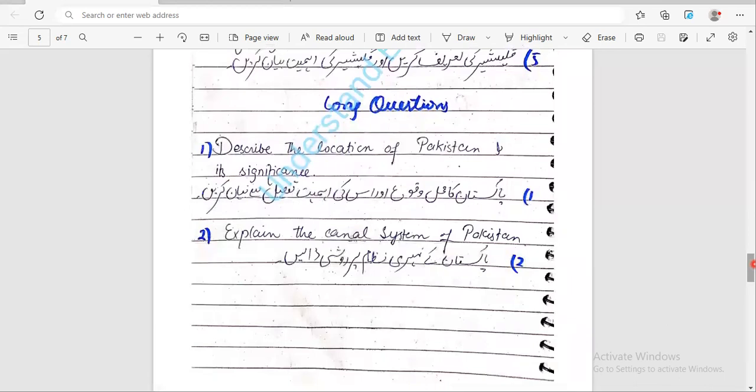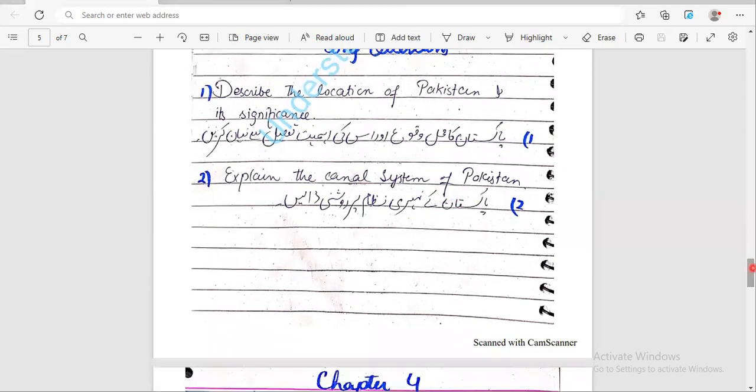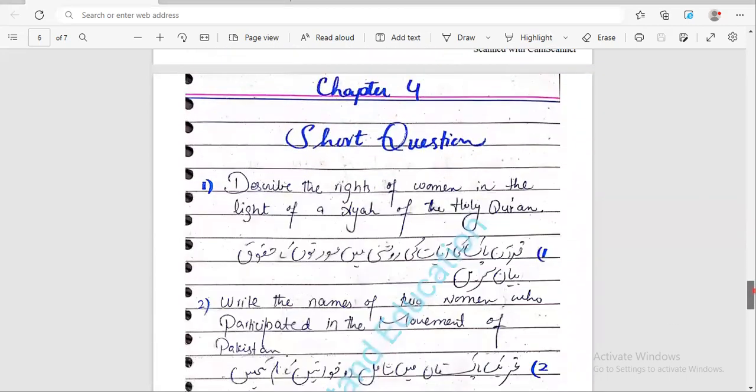Long questions: Describe the location of Pakistan and its significance. First it was in short. Now it came in long that describe Pakistan's location and explain its importance in detail - that Pakistan which is in this world at which place and why. What are the benefits to Pakistan? Second: explain Pakistan's canal system. You have to write about the canal system in Pakistan.